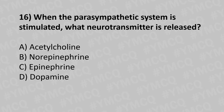Moving to our sixteenth question. When the parasympathetic system is stimulated, what neurotransmitter is released? Option A: acetylcholine. Option B: norepinephrine. Option C: epinephrine. Option D: dopamine. And the answer is option A: acetylcholine.